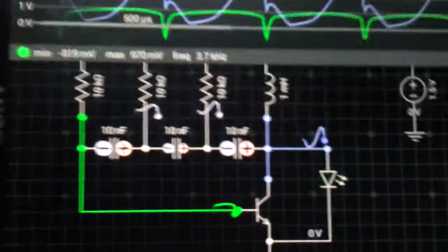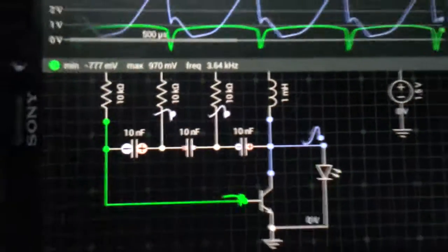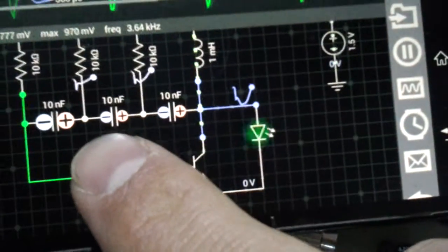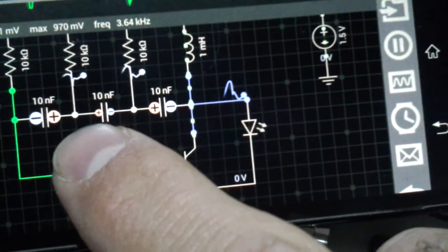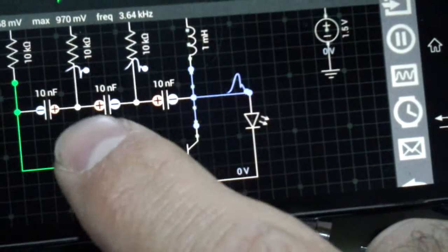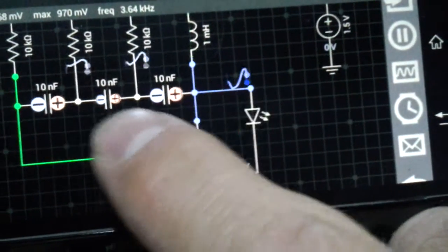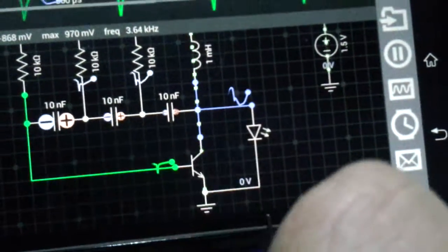And it just repeats the cycle over and over again. And as you can see, this one here, actually the polarity of the capacitor, those two here, change polarity.